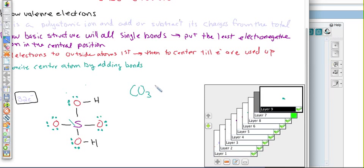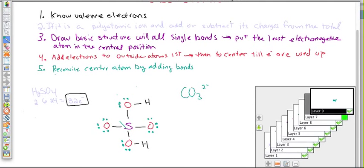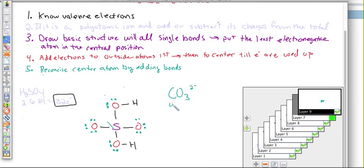So carbonate has a negative two charge. So let's go through, follow our rules and get this. So know valence electrons. So carbon has four, oxygen has six times three, so that's a total of 18, plus this has an overall polyatomic charge of negative two. So that adds two more. So we have a total of 24 electrons. Okay. So very important to start off there. Carbon is definitely our least electronegative atom. We're going to put that in the middle and all of these oxygens around it.